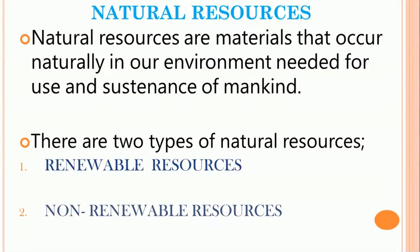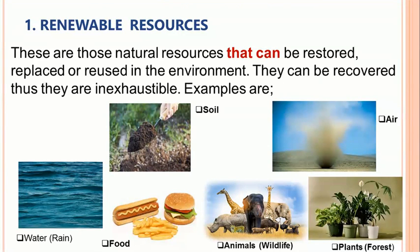Now, what are natural resources? Natural resources are materials that occur naturally in our environment and are needed as sustainers of mankind. There are two types: renewable natural resources and non-renewable natural resources. Renewable resources are those natural resources that can be restored, replaced, or reused in the environment. They can be recovered when used — thus they are inexhaustible, meaning they can never finish. Examples are water, soil, food, animals, plants, and air.